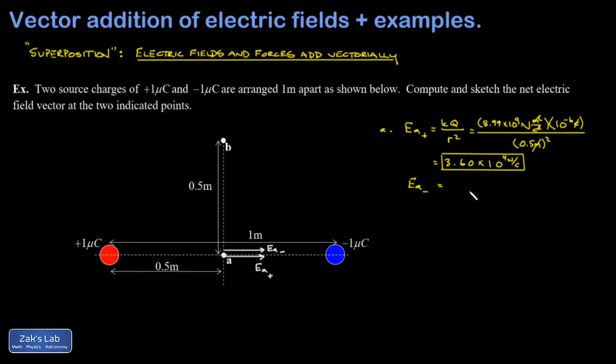The same K, the same Q, the same R by symmetry. And I get another 3.60 times 10 to the fourth newtons per coulomb.